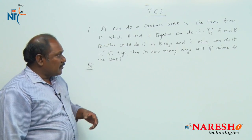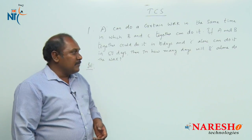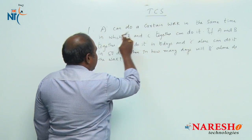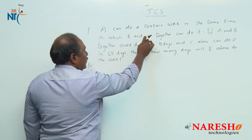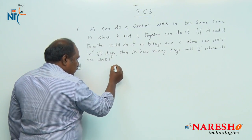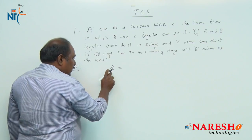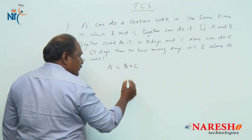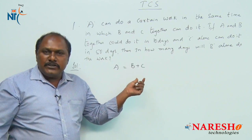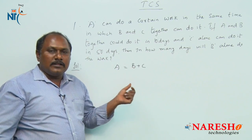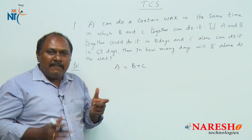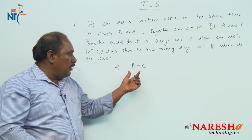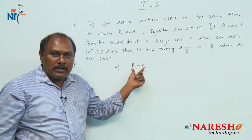Let us try to solve this question in a very simple way. It is given that A can do a certain work in the same time in which B and C together can do it — that is, A is equally efficient as B and C together. Whatever work A does in a given time, B and C have to work together to do the same work in the same time.